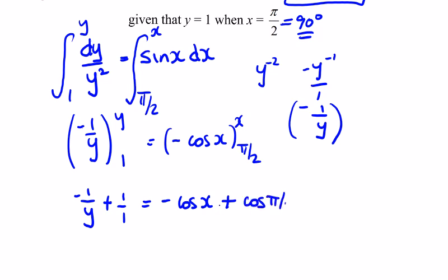The cos of pi over 2, the cos of 90 degrees, is equal to 0 based on your knowledge of the unit circle. So this is equal to 0.